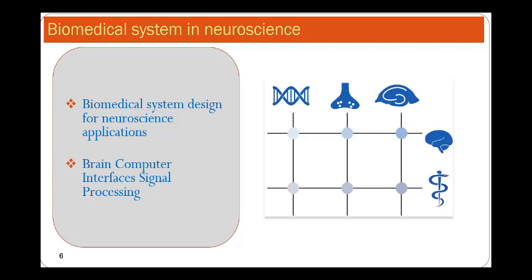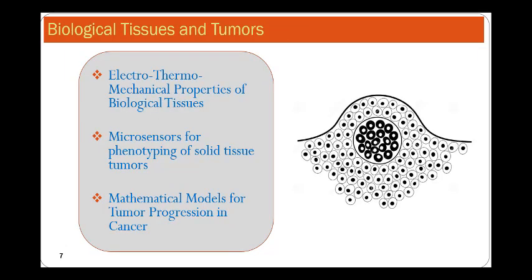Then we will move to brain computer interface signal processing, where we will learn about ERP lab analysis, pre-processing and denoising techniques for biomedical signals. The next area will be biological tissues and tumours.